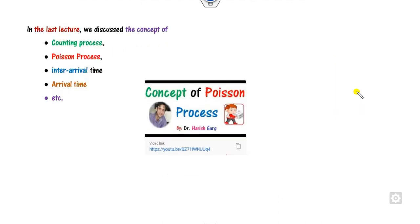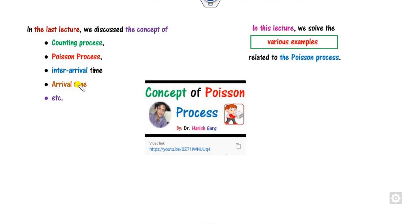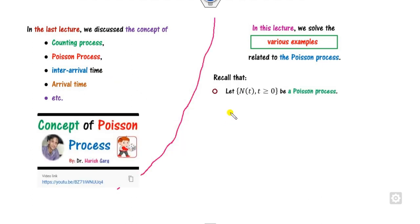In our last lecture, we described the concepts of the counting process, Poisson process, inter-arrival times, arrival times, and more — available on my YouTube channel Dr. Harishgarh. In this lecture, we will explain examples related to these concepts, but first I will briefly recall the key concepts.